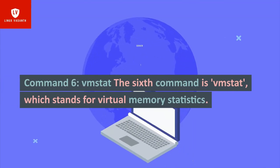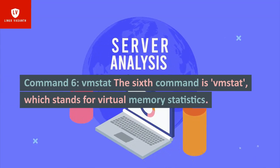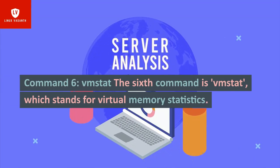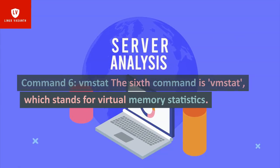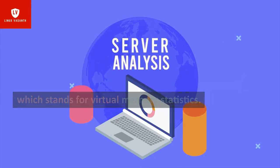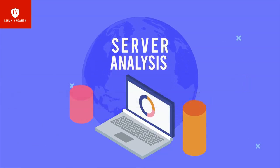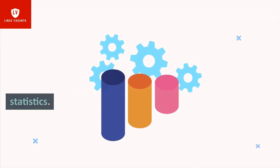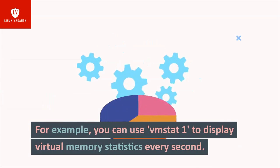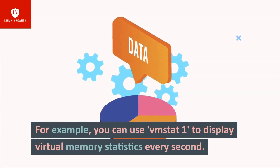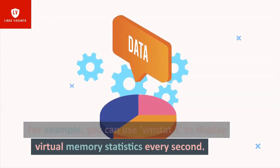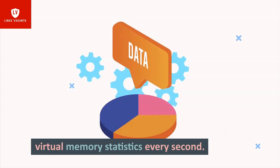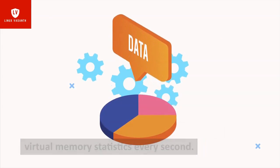Command 6: vmstat. The sixth command is vmstat, which stands for virtual memory statistics. This command is used to display virtual memory statistics. For example, you can use vmstat 1 to display virtual memory statistics every second.